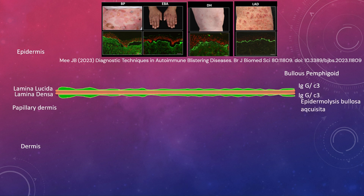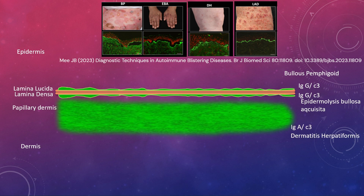In epidermolysis bullosa acquisita, there are autoantibodies against collagen 7 of the papillary dermis, so there is a deposition of immunoglobulin G and C3 on the dermal aspect of the basement membrane. In dermatitis herpetiformis, there is a deposition of IgA or C3 in a granular pattern in the whole papillary dermis. In linear IgA disease, there is a linear deposition of IgA throughout the basement membrane.